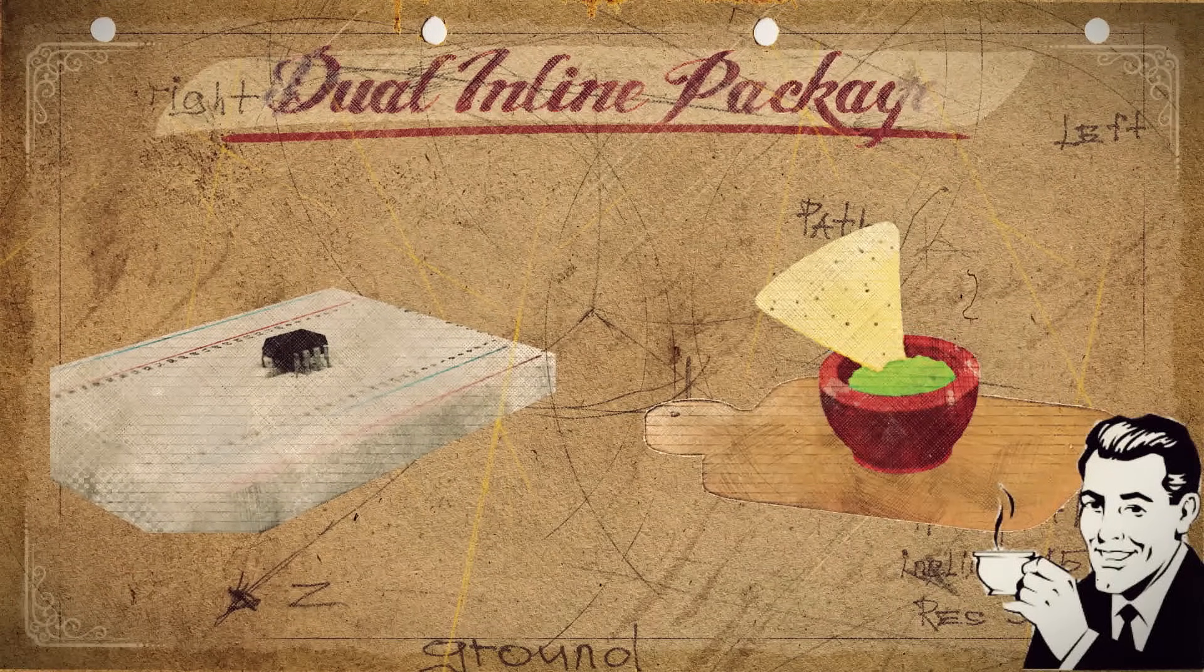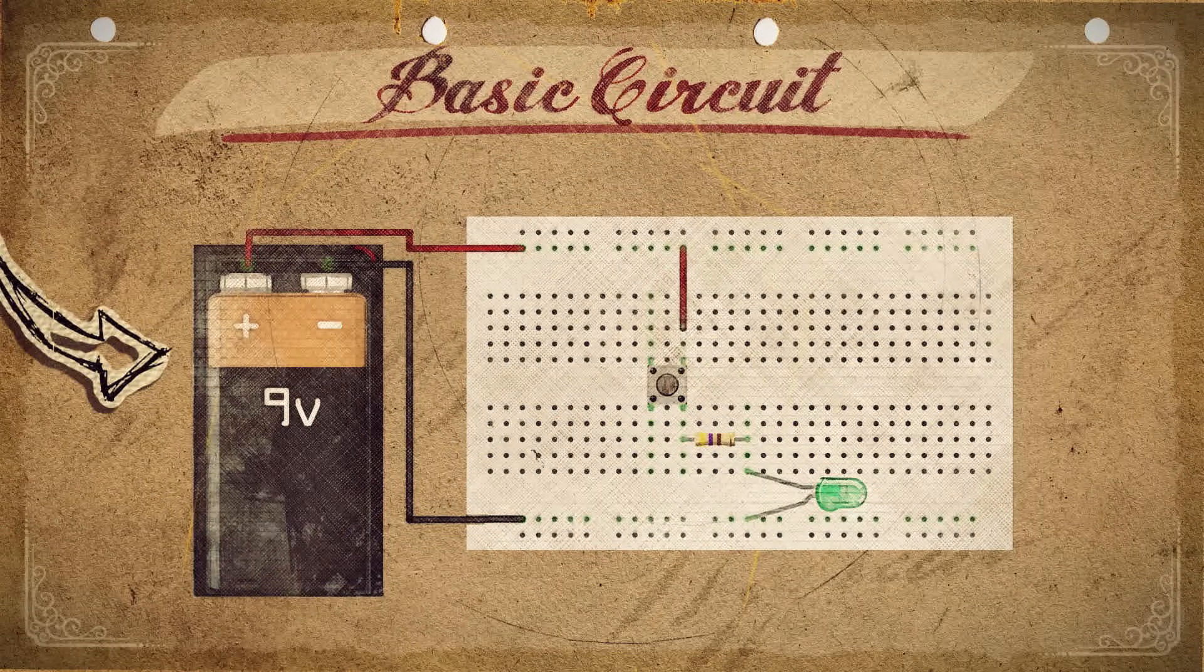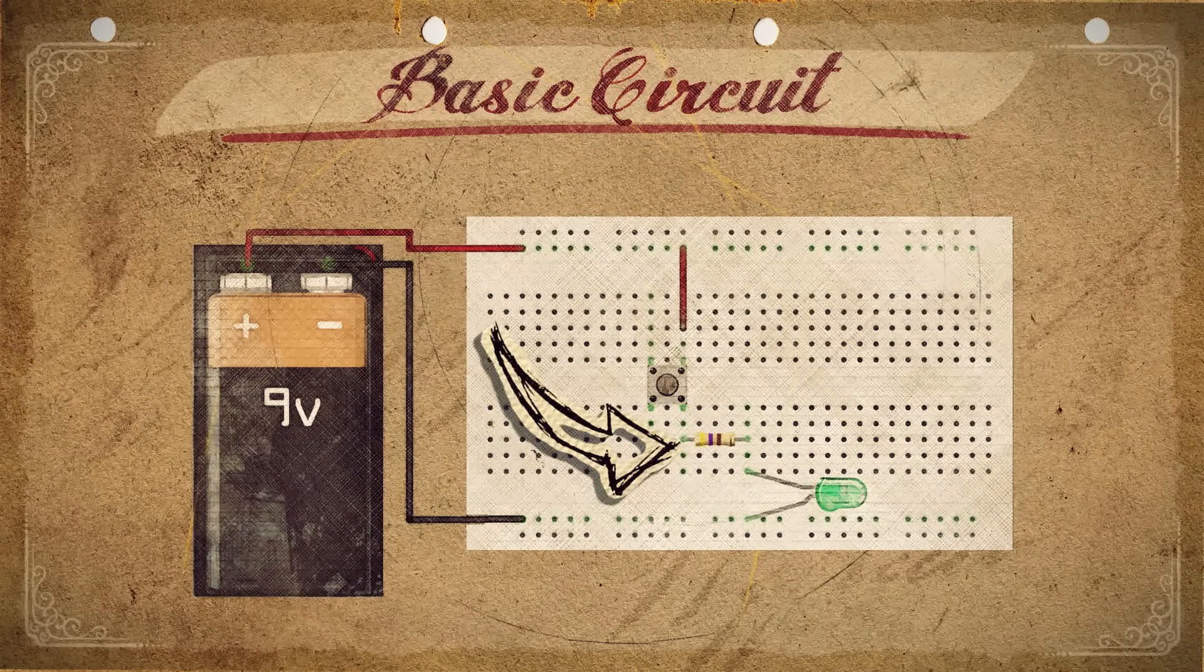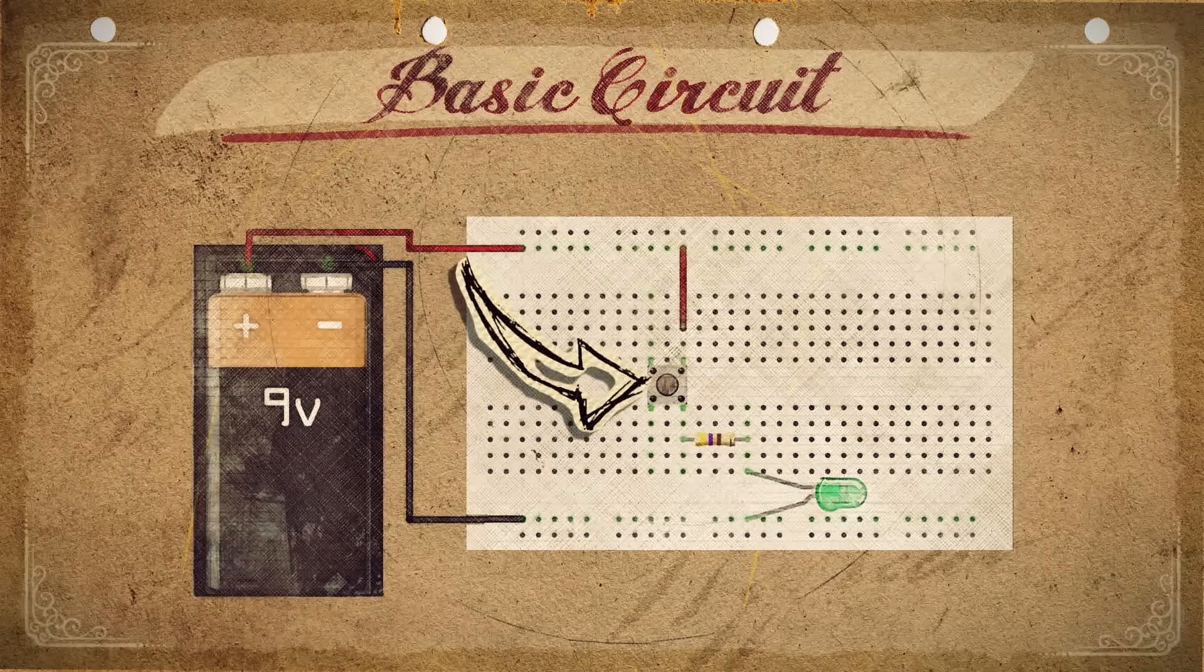Well alrighty then, let's test it out. As a simple example, let's do an LED switch where we have a 9 volt battery with a wire connector, a 470 ohm resistor, an LED, a spare piece of wire, and a button switch.